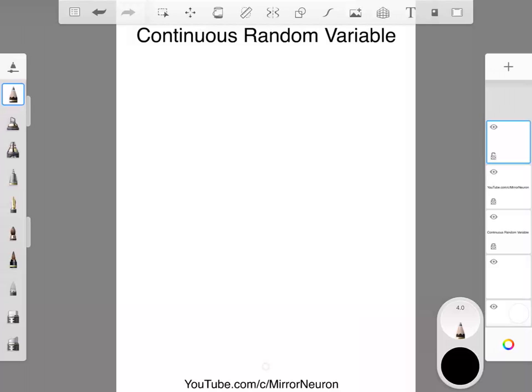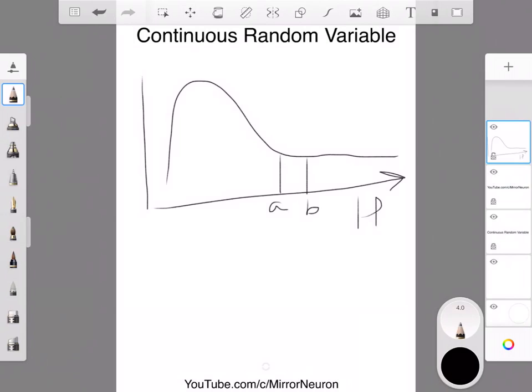Okay, so let's continue with our idea of the continuous random variable. This is my height, and say I have some distribution of getting that height. I'm considering a small range instead of a particular value.